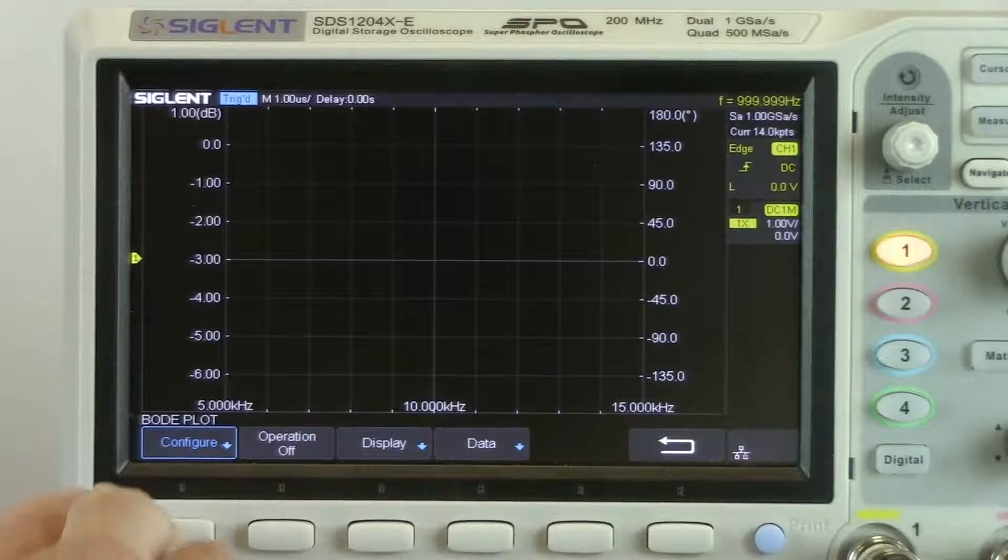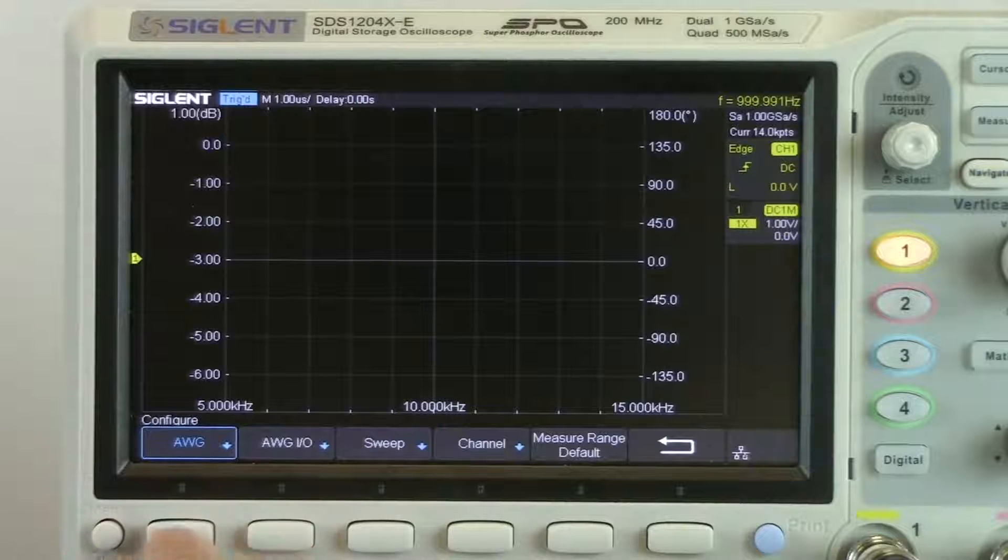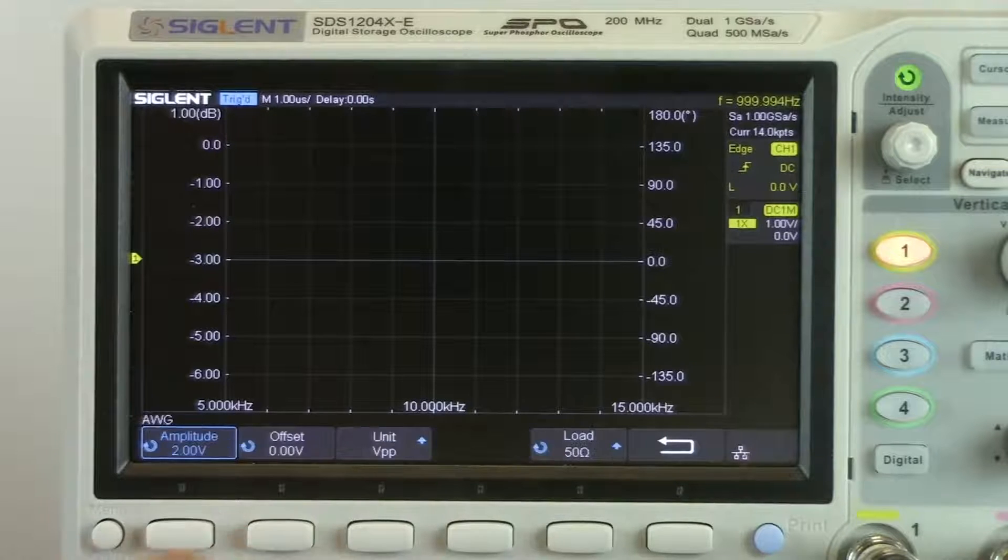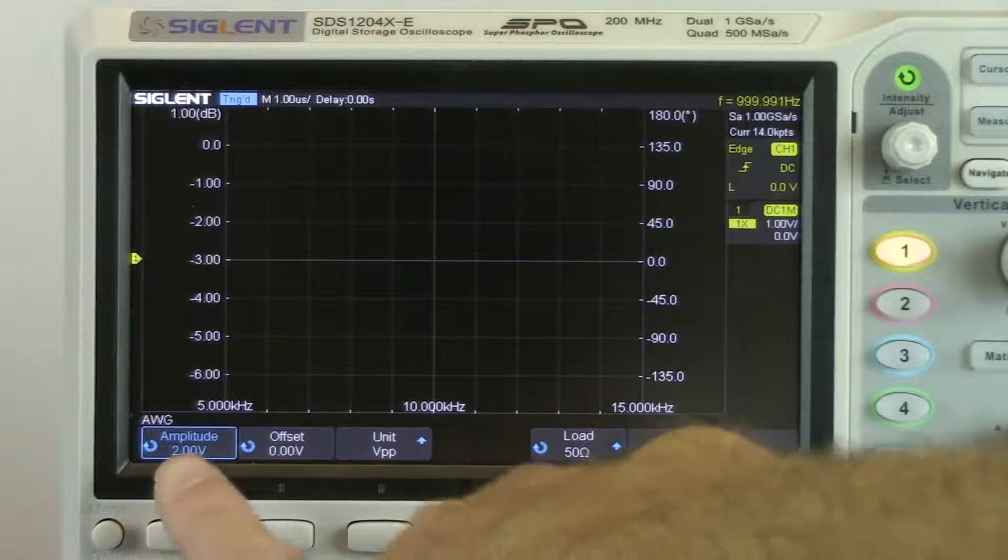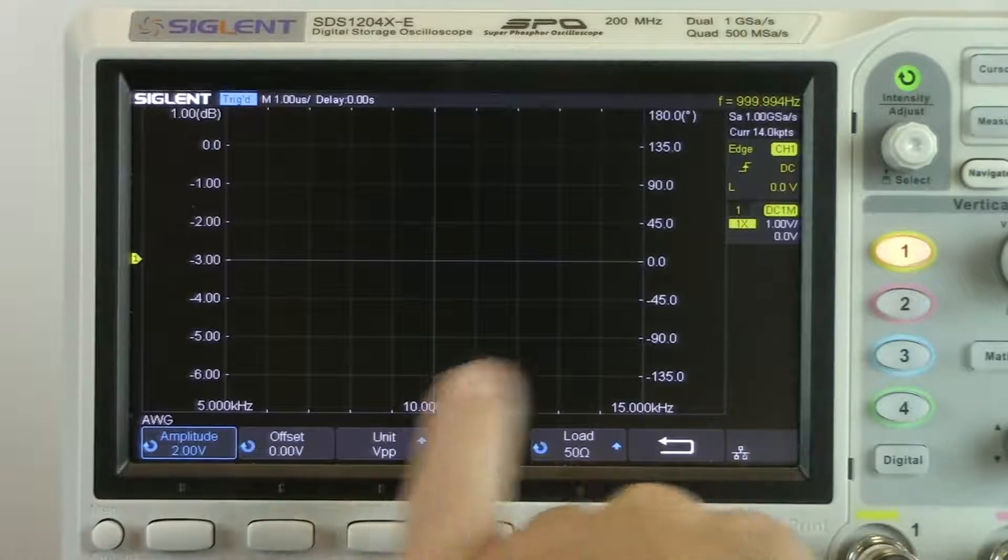Let's go to configure here. And you can see the AWG. With the AWG menu, that allows us to configure the amplitude and units as well as the output load setting. In this case, we're just going to do 2 volts peak to peak at 50 ohms.